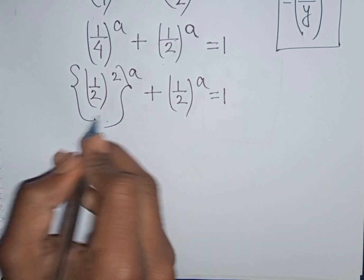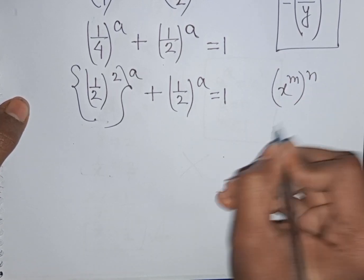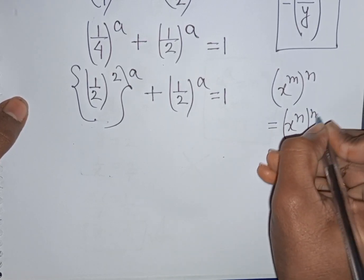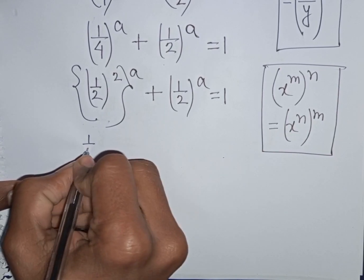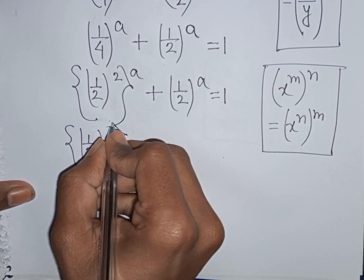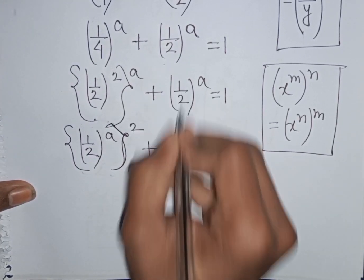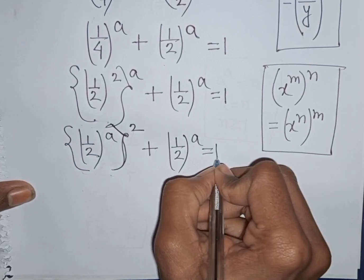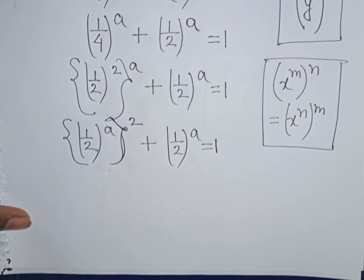Here you can apply this exponential rule that (x power M) bracket power N is equal to (x power N) bracket power M. So according to this rule, we can write here (1/2) bracket power A, 2nd bracket power 2, plus (1/2) bracket power A is equal to 1. We see (1/2) bracket power A appears in both terms — the same.